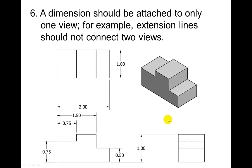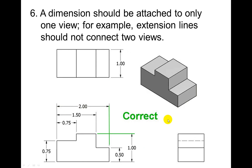A dimension should be attached to only one view. For example, extension lines should not connect two views. You can see the problem here. This would be incorrect. It needs to be on just the front or just the top or just the right. Again, this is the correct view.